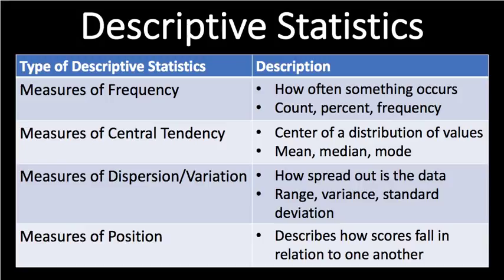Measures of position describes how scores fall in relation to one another. A common example is when you take your SATs or an exam and they give you the percentile that you fall in — they're comparing how well you did compared to the average.